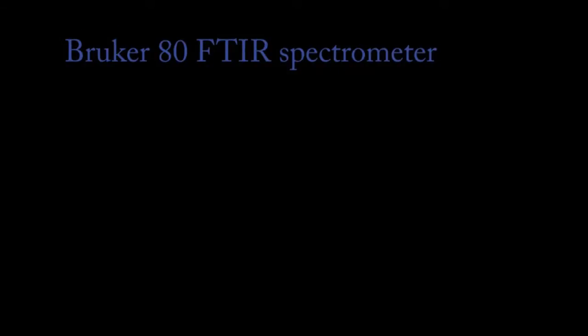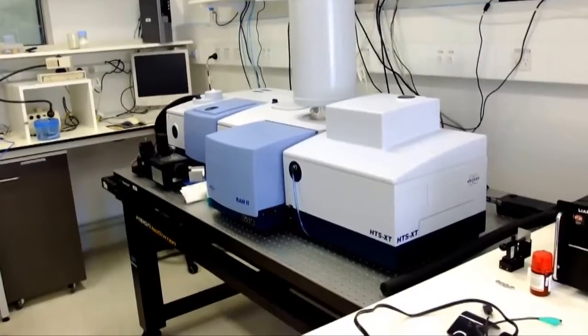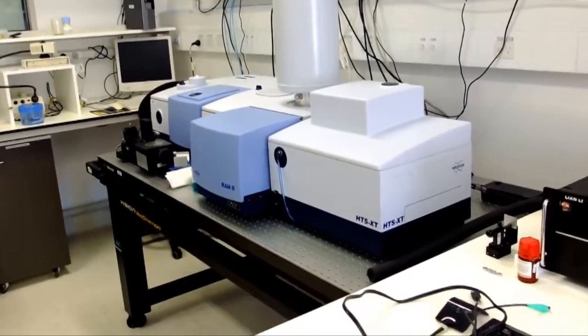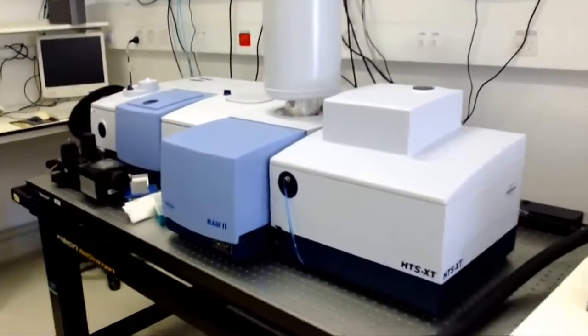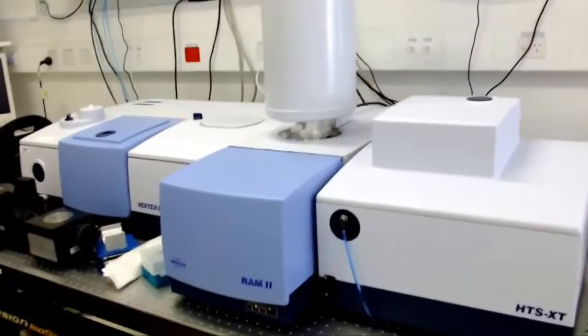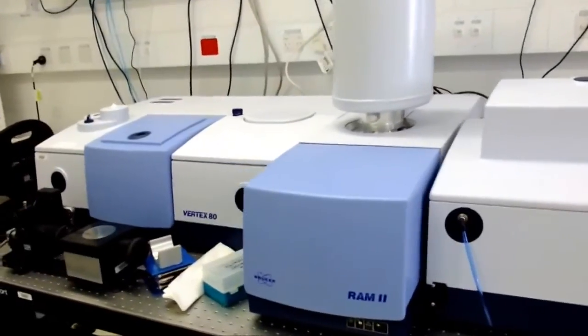This is a product overview of the Bruker 80 FTIR spectrometer. It's shown here with a couple of accessories. There's a high throughput sampling accessory called the HTS and a RAM 2 module.